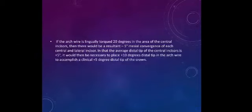If the arch wire is lingually torqued 20 degrees in the area of the center incisor, then there would be a resultant 5 degree mesial conversion of each center and lateral incisor. If the average distal tip of the center incisor is plus 5, it would be then necessary to place plus 10 degree distal tip in the arch wire to accomplish a clinical plus 5 degree distal tip of the crown.